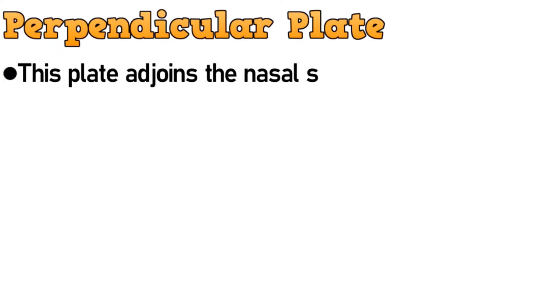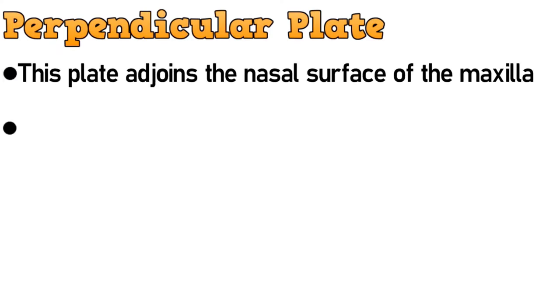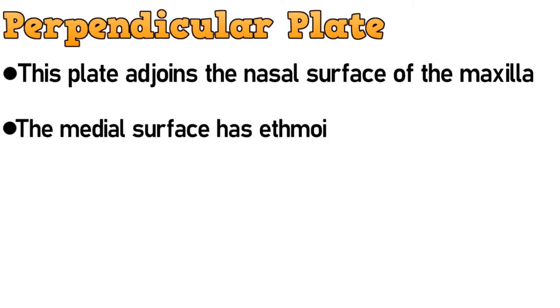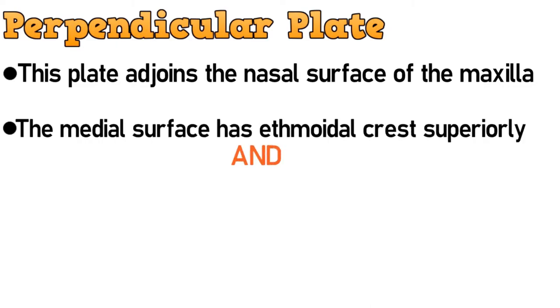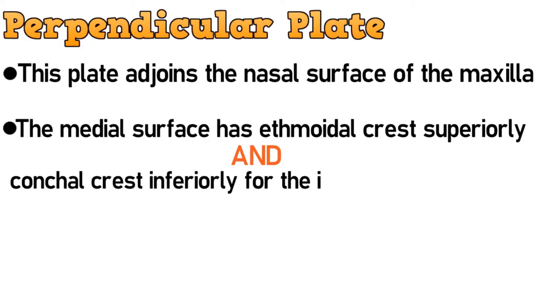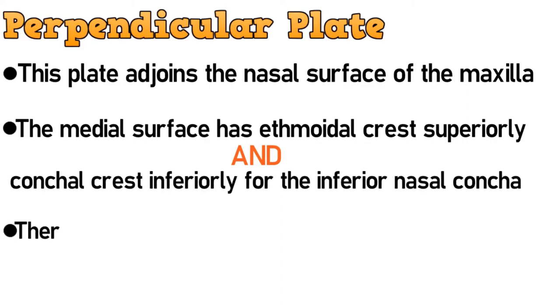Moving on to the perpendicular plate. This plate adjoins the nasal surface of the maxilla. The medial surface has the ethmoidal crest superiorly and the conchal crest inferiorly for the inferior nasal concha. There is the greater palatine groove on the lateral surface of the perpendicular plate.